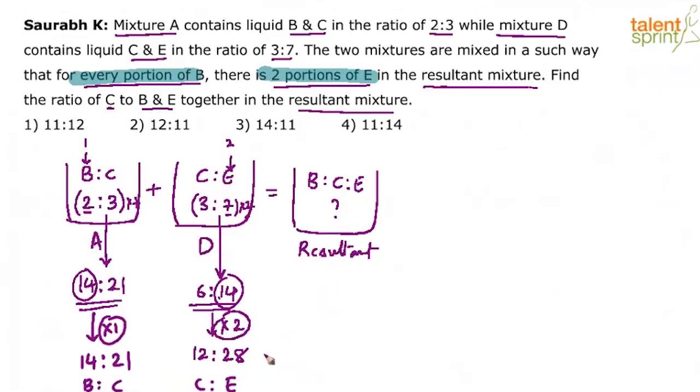So in the resultant mixture, what happens? B is to C is to E. In this mixture, B is to C is to E would be how much? B is to C is to E would be 14 is to C is what? 21 plus 12, 21 plus 12 is to E, 28.